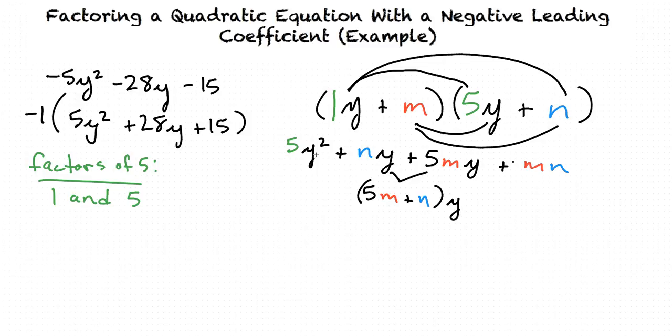Now if we compare this 5y² + (5m + n)y + mn with 5y² + 28y + 15, we see some relations here. Here's our 5y². This right here, 5m + n, corresponds to 28. And we see here that mn corresponds to 15, the third term in our quadratic.